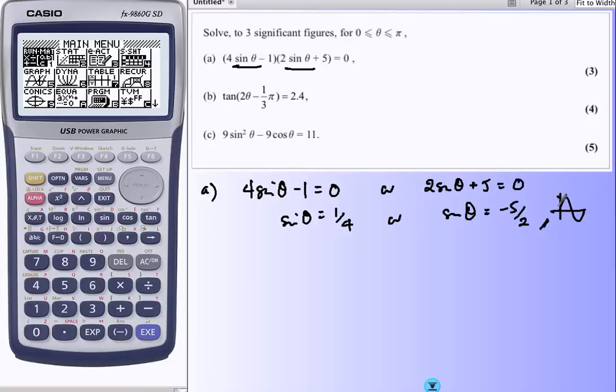Think of the graph, sinθ, one to minus one, never does it become -5/2, so that's never zero. That's not going to give us solutions, this one will though. Sinθ is a quarter.